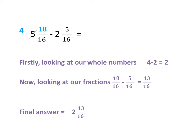We are now ready to do this calculation. Firstly looking at our whole numbers we have 4 take away 2. 4 take away 2 is 2. Now we can look at our fractions. We have 18 sixteenths subtract 5 sixteenths. 18 subtract 5 we are left with 13 sixteenths. So our final answer is we have 2 whole ones and 13 sixteenths. So our final answer is 2 and 13 sixteenths.